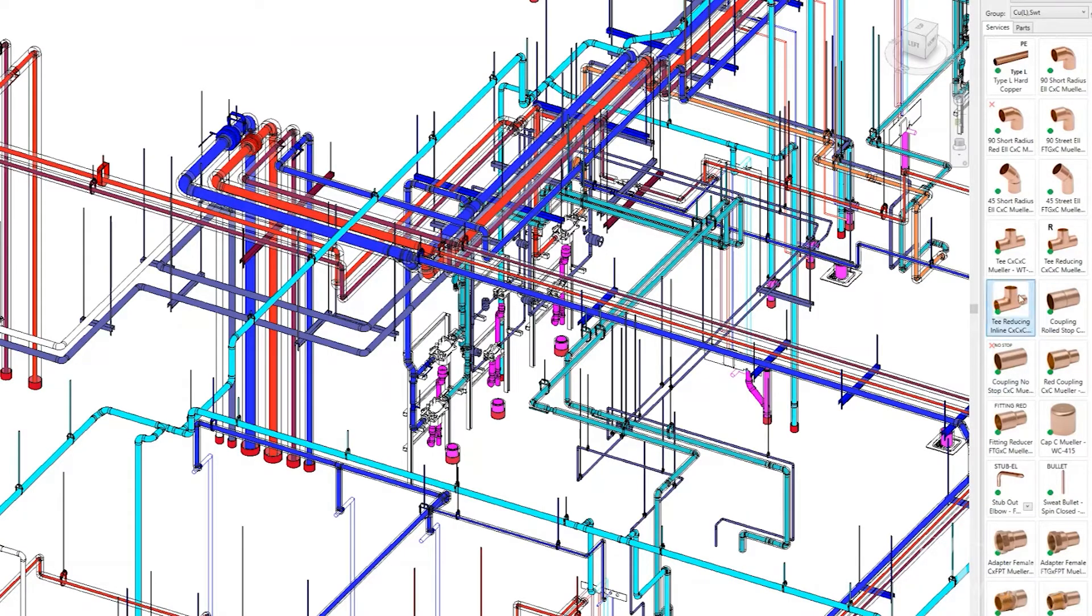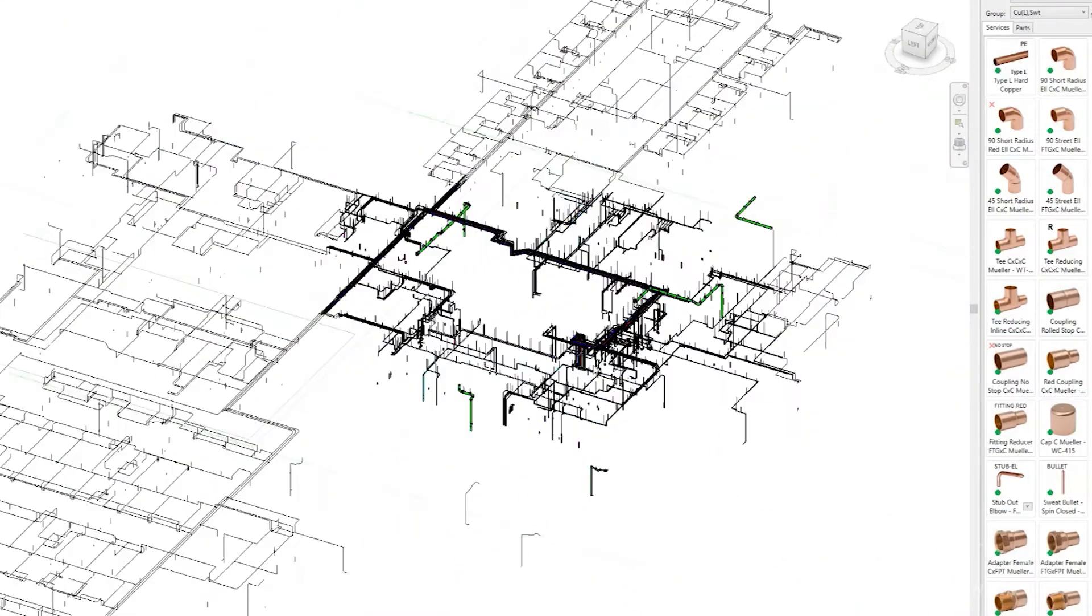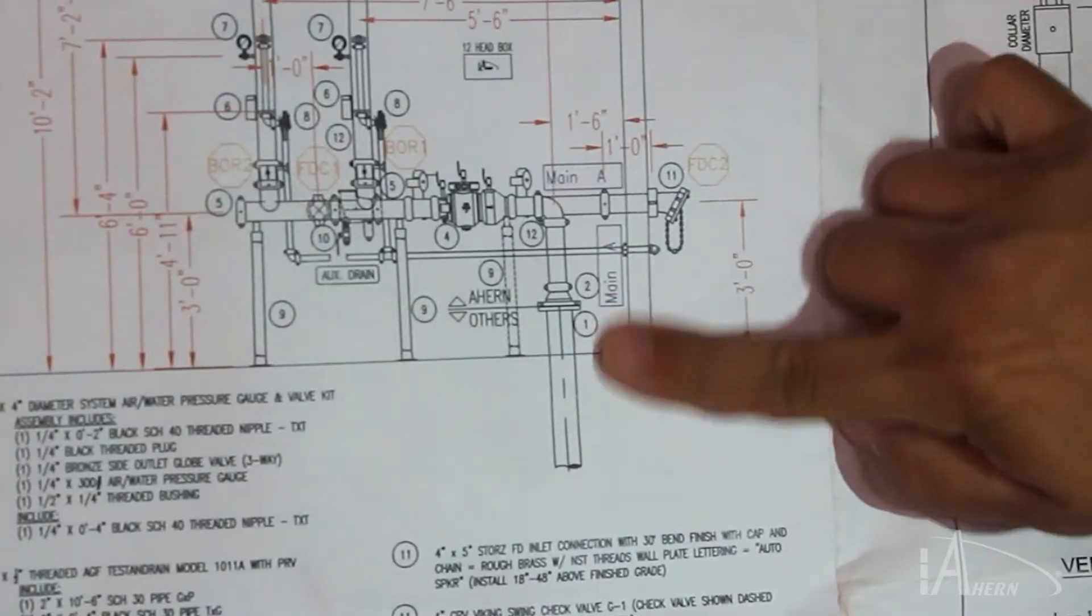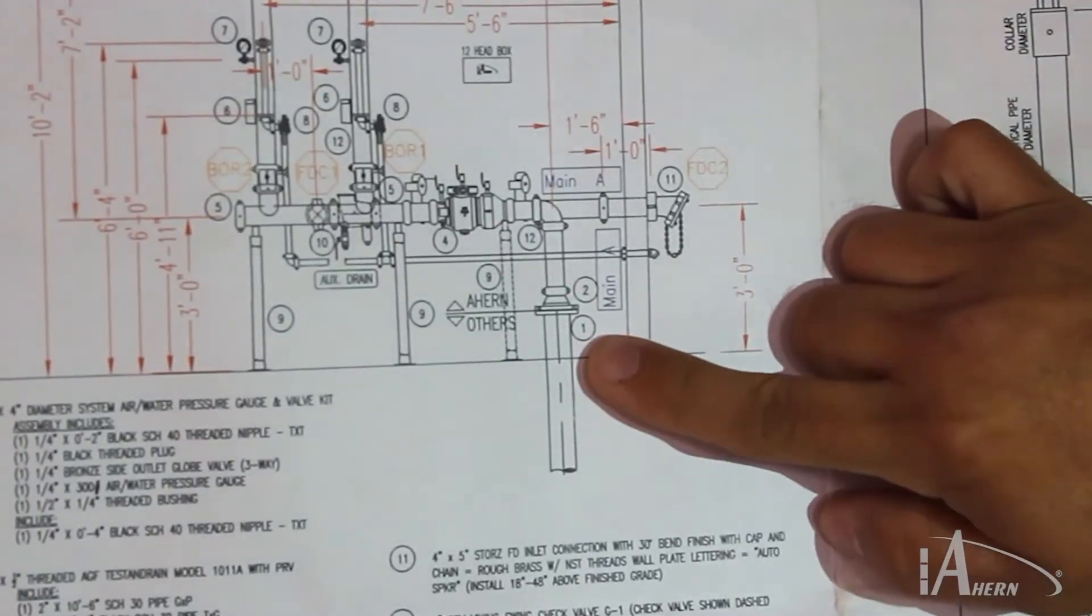Modeling can vary in levels of detail. On a project like Cumberland, we go to great levels of detail modeling with manufacturer and model specific parts and fittings to coordinate and fabricate from.